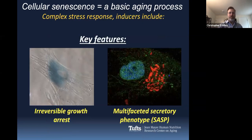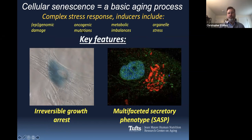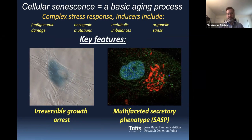So what is cellular senescence? The key feature of it is that it's a stress response. Cells that are dividing stop dividing when they undergo certain forms of stress, and then they become senescent cells. These stresses include genomic and epigenomic damage — things that break our DNA — mutations that activate oncogenes, metabolic imbalances such as diabetes, and organo stressors such as problems with our mitochondria. All of these can drive cellular senescence.